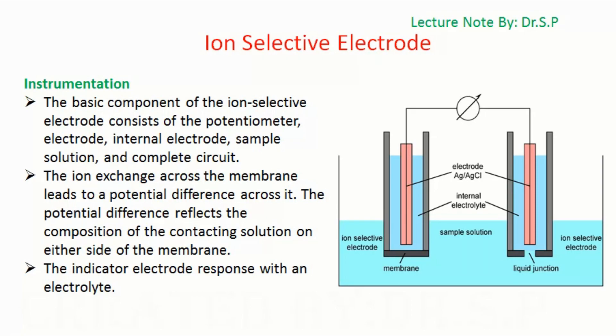Instrumentation of Ion Selective Electrode is shown in the figure. The basic component of the Ion Selective Electrode consists of the potentiometer, electrode, internal electrode, sample solution, and complete circuit. The ion exchange across the membrane leads to a potential difference across it.